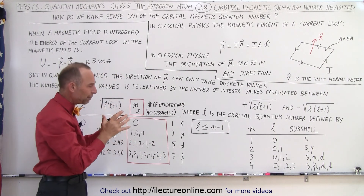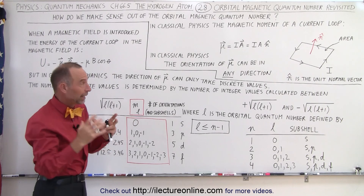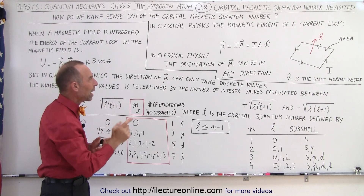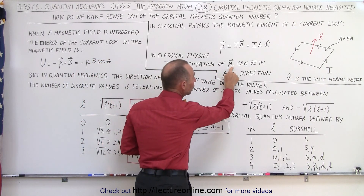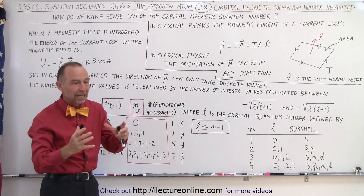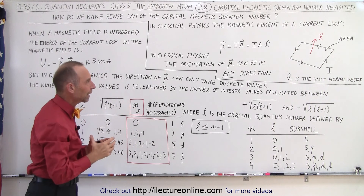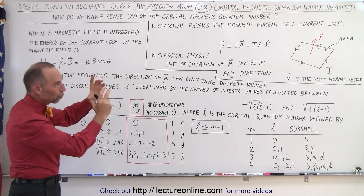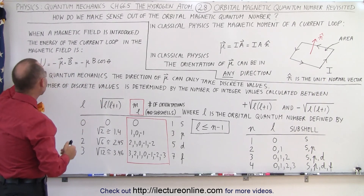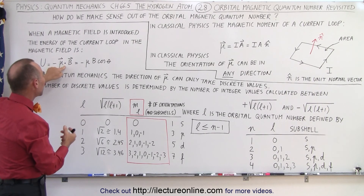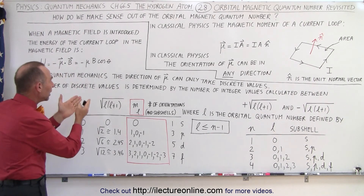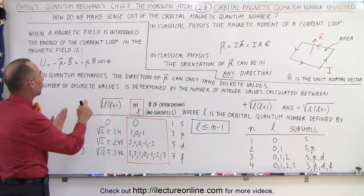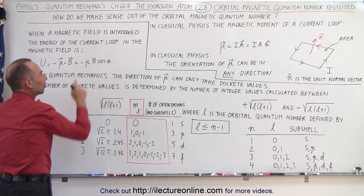What happens when you have a current loop — therefore the current loop has a magnetic moment — and we place it in a magnetic field? There will be an interaction between the current loop and the magnetic field. In classical physics, the orientation of that moment can be in any direction; there's no limitation. So there can be any orientation of a current loop, and therefore of the magnetic moment, when placed inside a magnetic field. There will be an energy associated with that, equal to the dot product between the magnetic moment and the magnetic field, which also depends upon the angle between the normal vector and the direction of the magnetic field — so it's the magnetic moment times the magnetic field times the cosine of that angle.